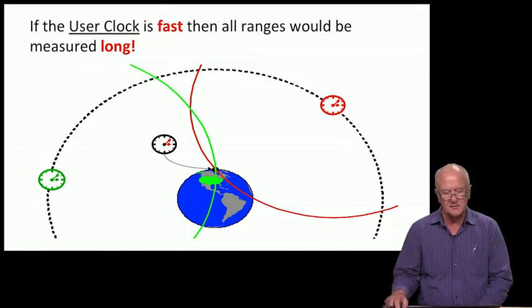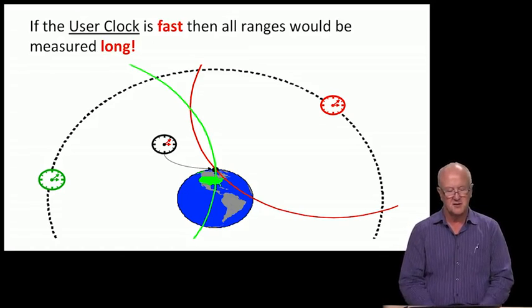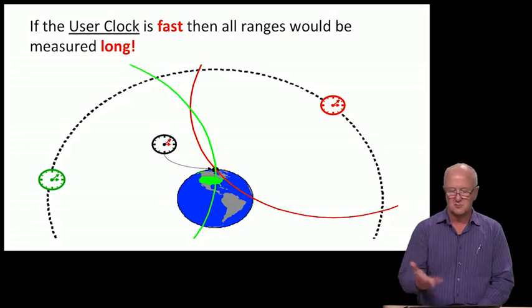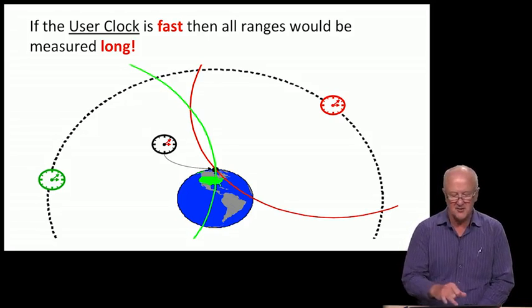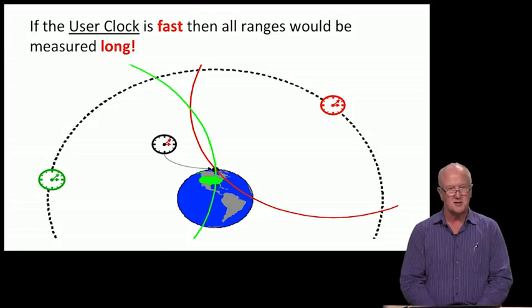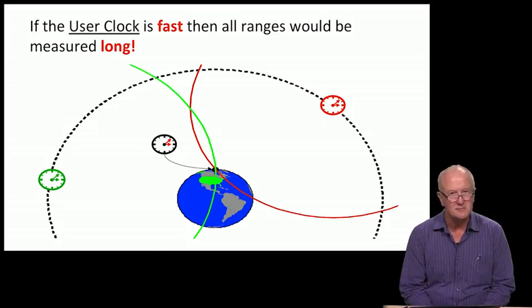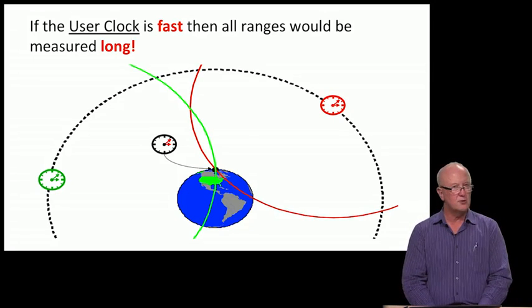Consider the possibility that the user clock is fast. For simplicity, assume the satellites transmit at exactly 12 o'clock, and it takes one minute to reach the user. Our expected arrival time would be 12:01, but the user clock is fast, so at 12:01 it's actually saying 12:02.